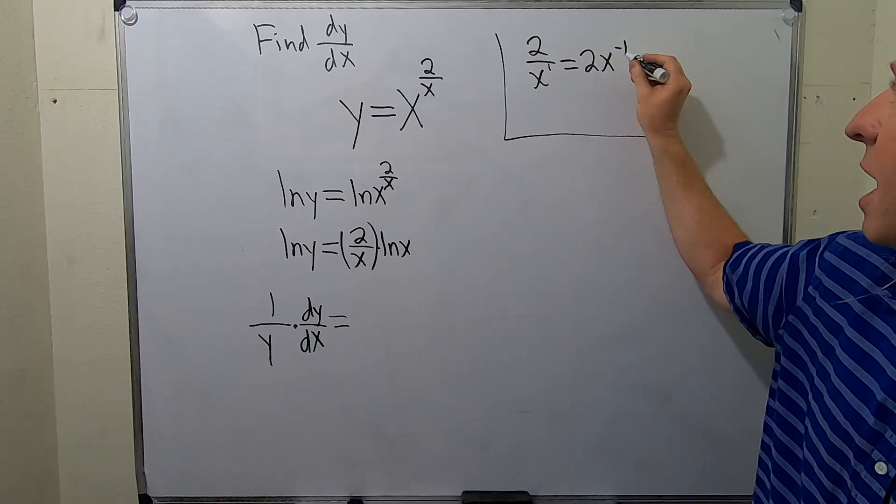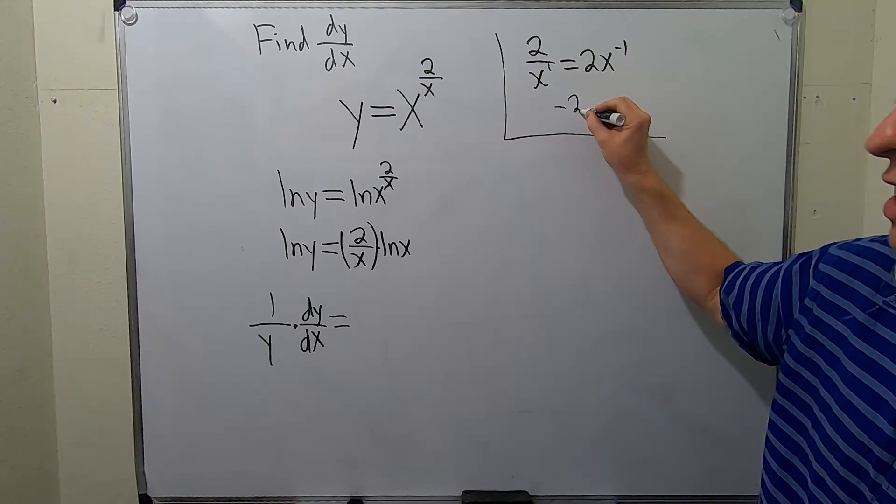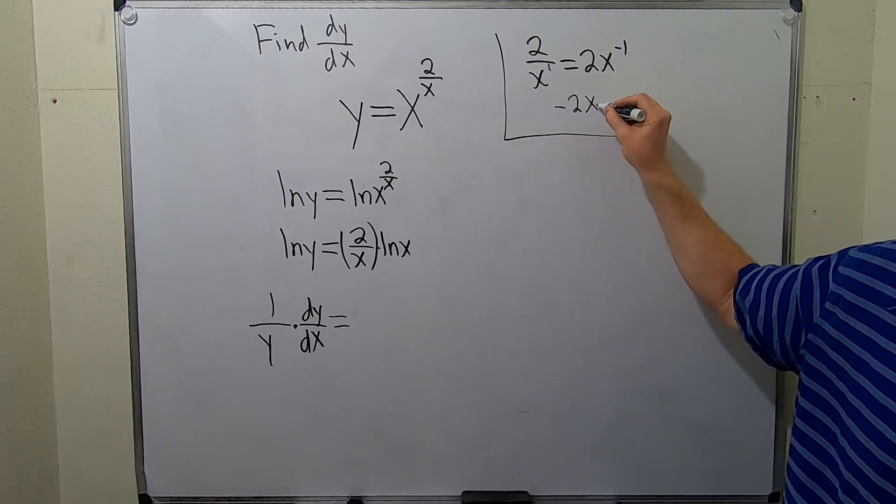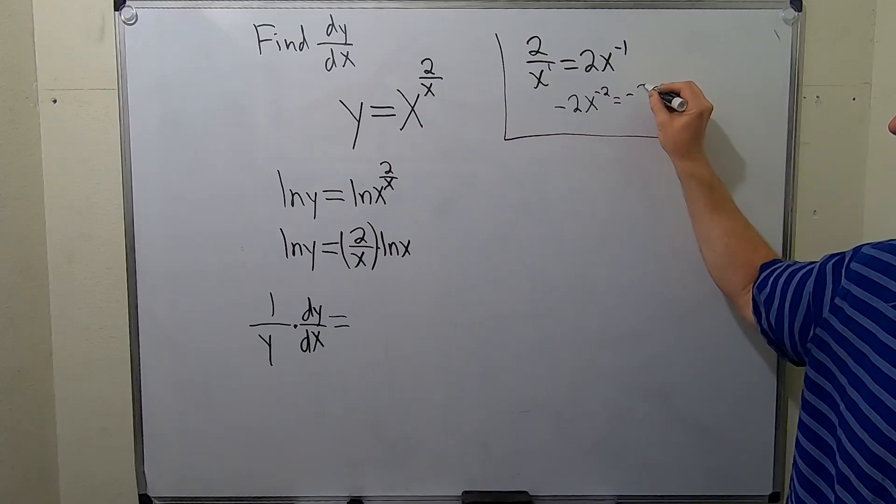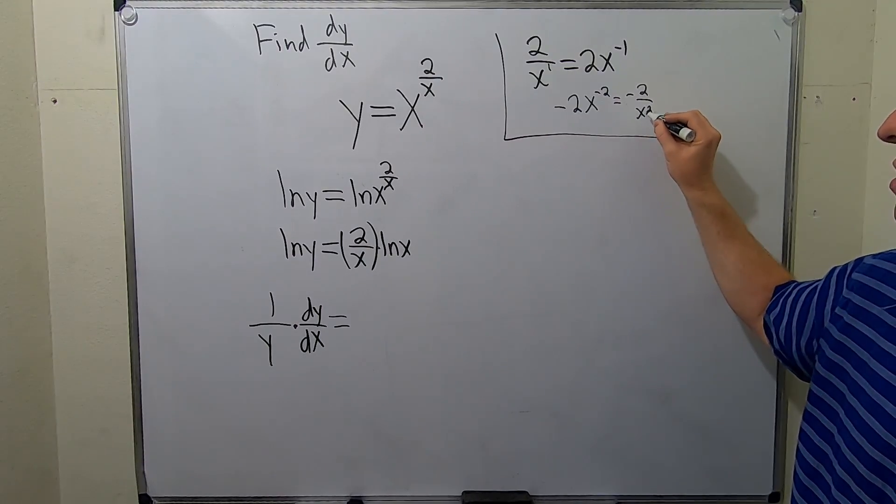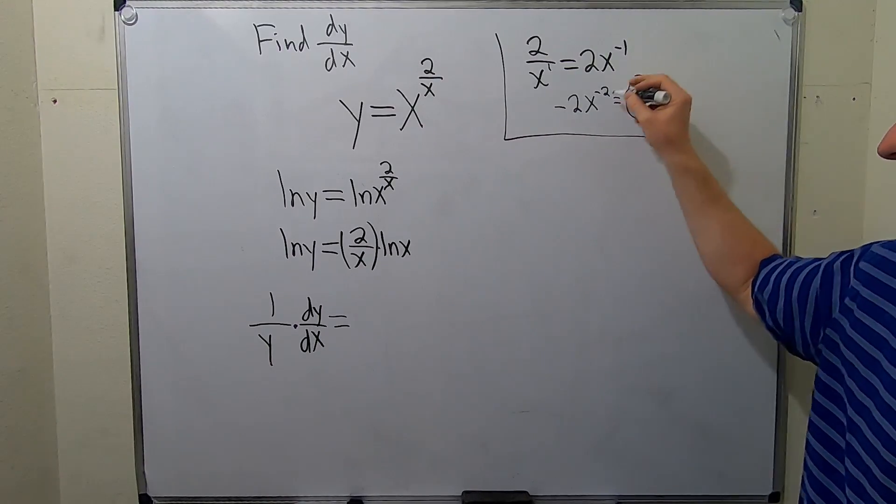Then when you take this derivative, what happens here is you put the negative in the front and then you subtract 1. So negative 1 minus 1 is negative 2, so you get negative 2 over x squared. So this is going to be the derivative of the first piece.